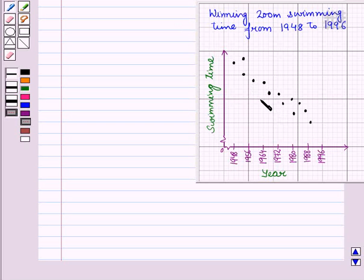Now here we can see that all the points are moving in a downward direction on the scatter plot. And we know that when the points are moving in a downward direction, there exists a negative relationship between the two variables. So here there is a negative relationship between years and swimming time.